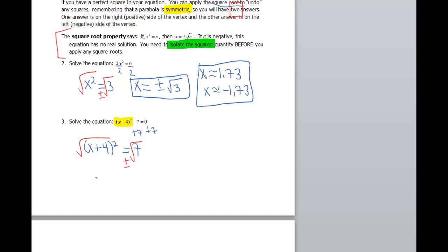So that gives me x plus 4 equals, another lovely number, plus or minus the square root of 7. Not pretty, but that's okay. So now I need to solve for x. So I need to undo that plus 4 with a minus 4.